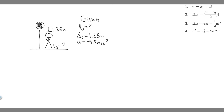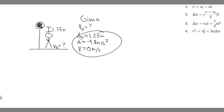We're also assuming the final velocity is zero meters per second. The reason is that we assume the player's highest point is at 1.25 meters above the ground. When something reaches its highest point, its velocity is always zero. So the player's final velocity is zero meters per second at that peak.